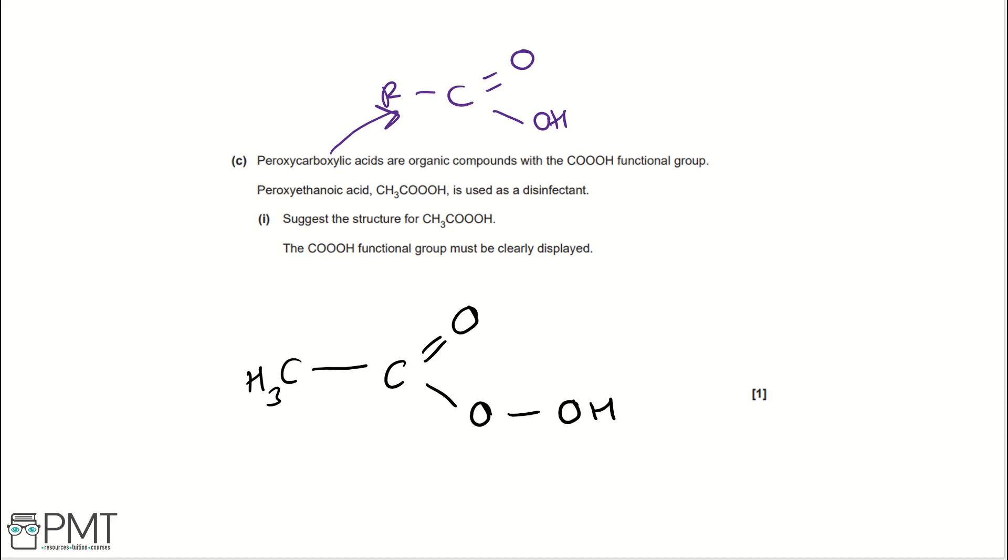But instead, because it's peroxycarboxylic acid, instead of having the carbon here bond to an OH, we've got it bonding to an oxygen, and then the oxygen bonding to the OH, which makes it slightly different to just a carboxylic acid. So, for this question, you need to draw the structure completely correct, having the carbon-carbon bonding together, rather than carbon-hydrogen here, as I've drawn C3H, rather than CH3 and having the hydrogen bonding to the carbon, because that wouldn't work. So, making sure we've got this whole correct will get you the mark.